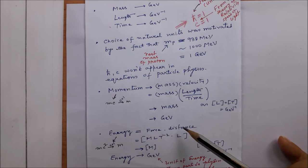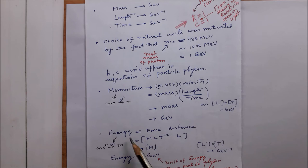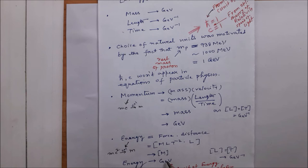Energy is force times distance. Writing out the dimensions of force, since length and time are of the same dimension they cancel out and we are left with mass, so energy is in GeV. This is consistent with Einstein's famous relation E = mc²: since c is 1 in natural units, E equals M, and M is in GeV.